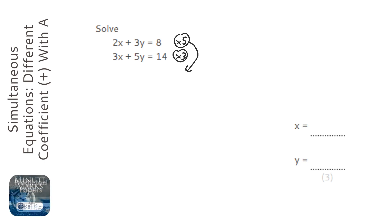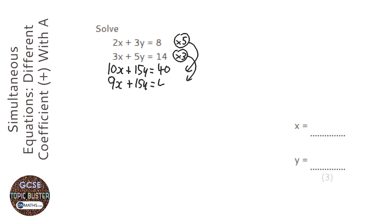So what have we got? We've got 10x plus 15y equals 40, and then we've got 9x plus 15y equals, and then what's that going to be, 42.